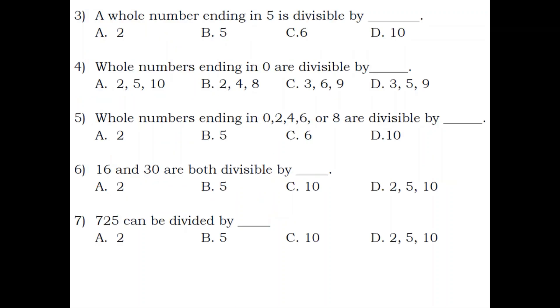Number 3. A whole number ending in 5 is divisible by blank. A. 2. B. 5. C. 6. D. 10. Answer: B. 5.